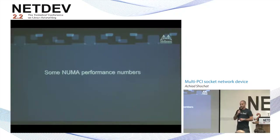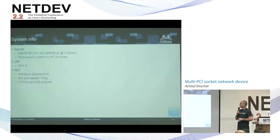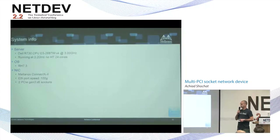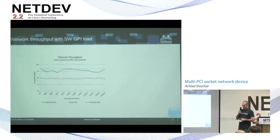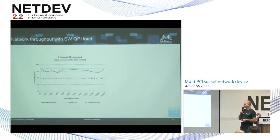Finally, some performance numbers from tests we ran on a NUMA system. We used a Dell server running at 3.2 GHz with 24 cores and no hyper-threading, Red Hat 7.3, a Mellanox ConnectX-4 NIC with a port speed of 100 Gbps, and two PCIe Gen3 x8 sockets. We tested the throughput of Ethernet traffic and loaded the QPI interconnect with software traffic — applications on the two sockets accessing each other's remote memory — then ran the network application.